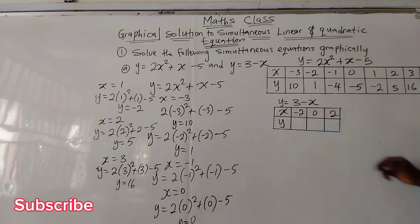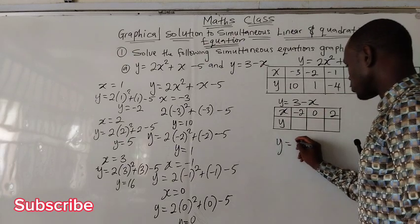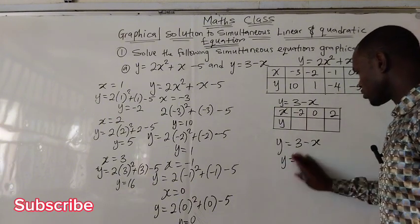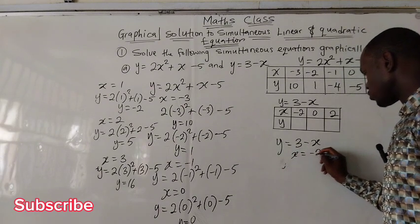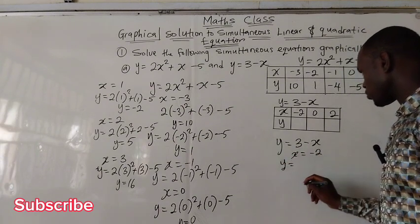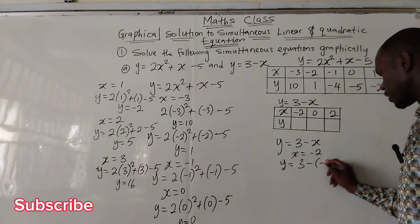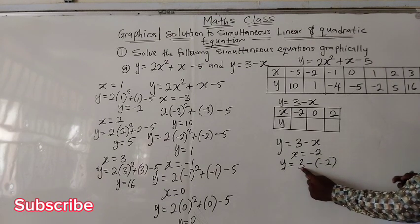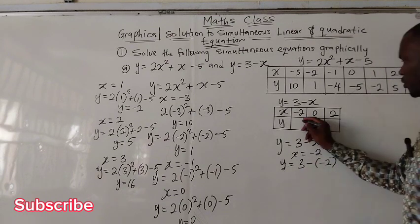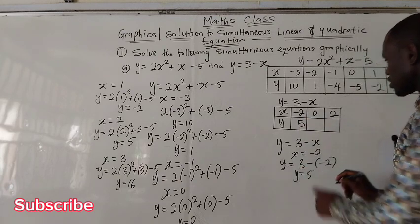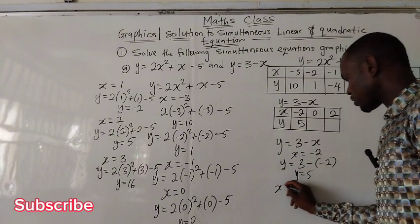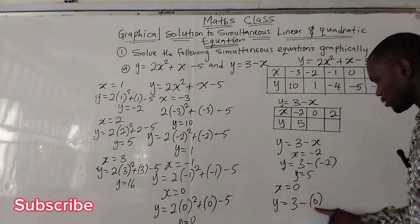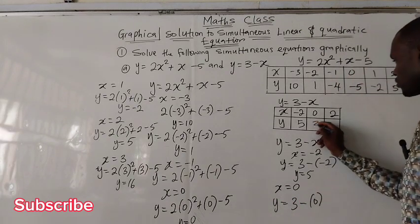Now let's solve for the linear equation. We have y equal to 3 minus x. When x is negative 2, y is 3 minus negative 2 — don't forget to put this in a bracket. Minus times minus is positive, so 3 plus 2 is 5. When x is 0, y equals 3 minus 0, which is 3.